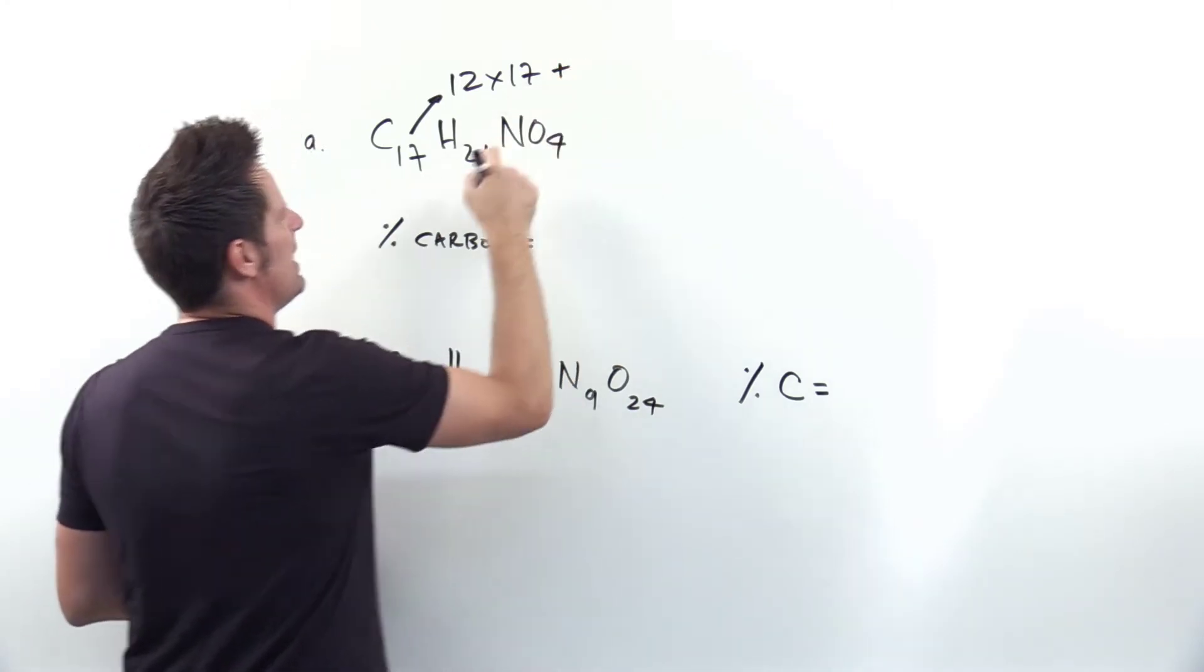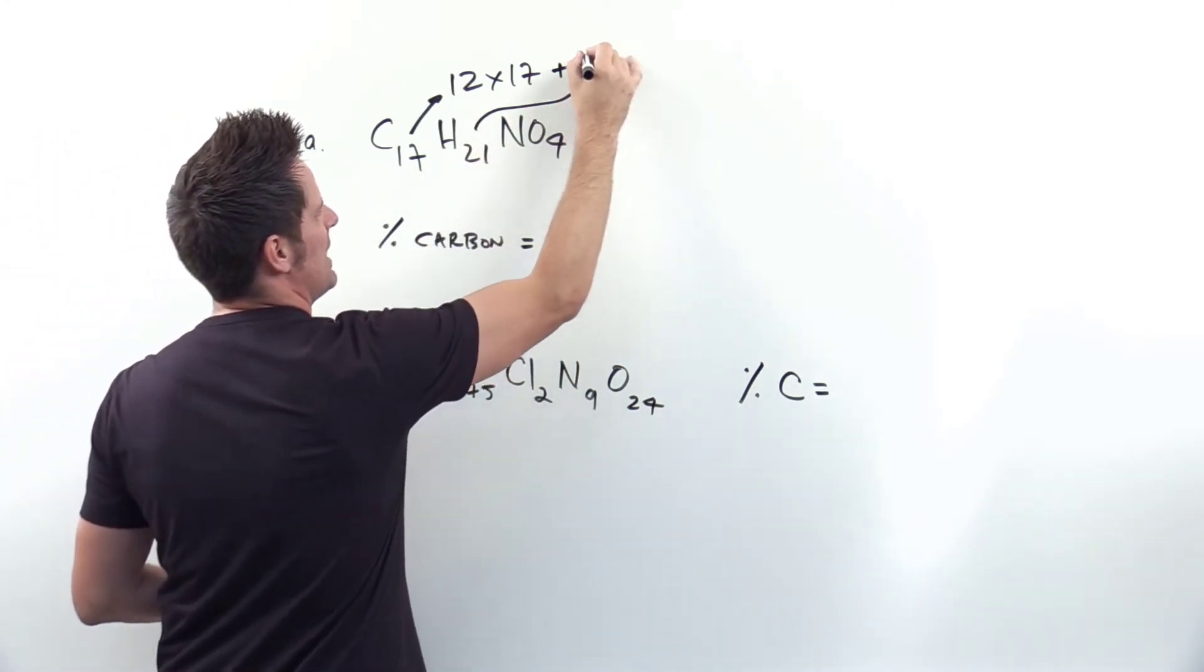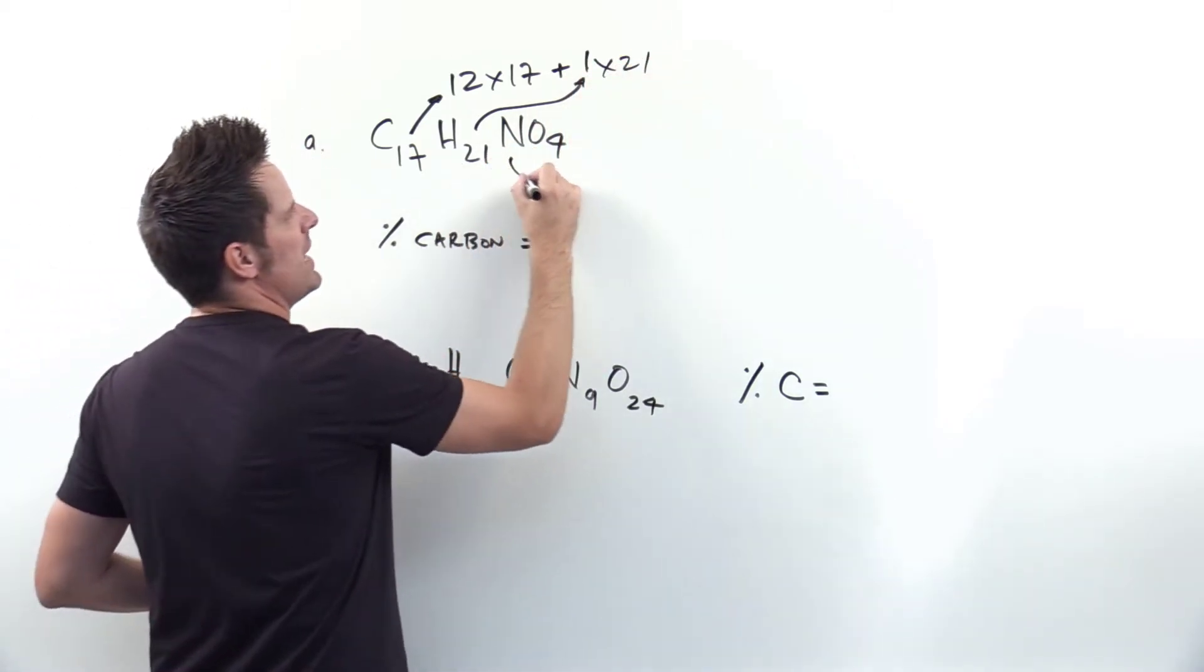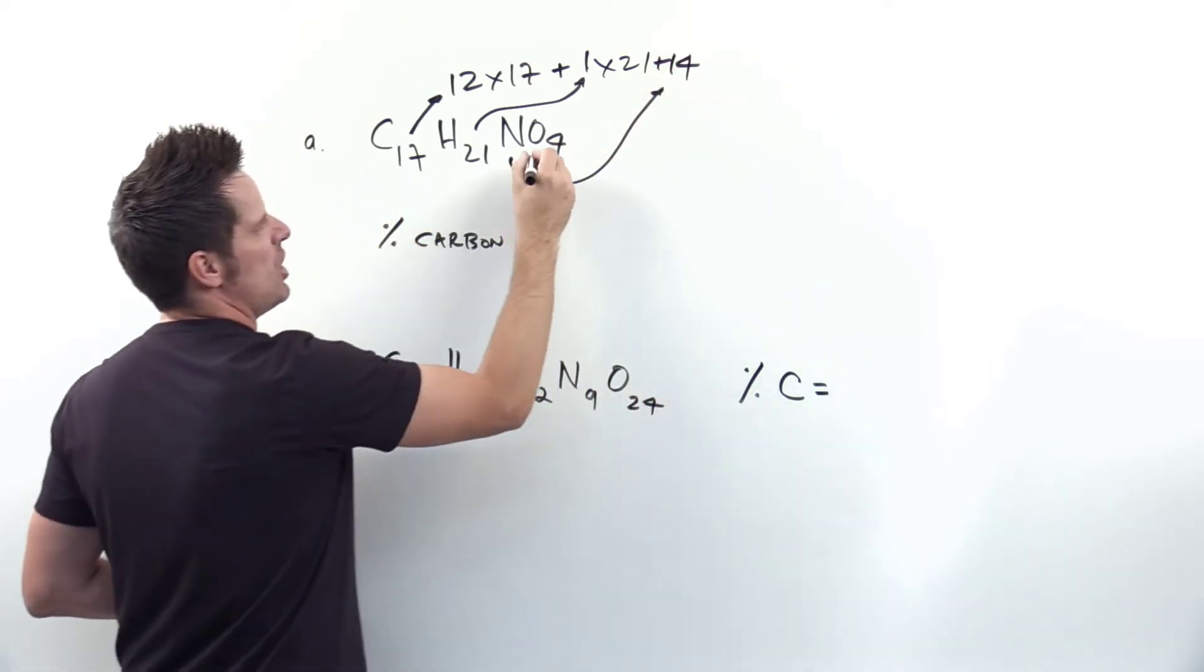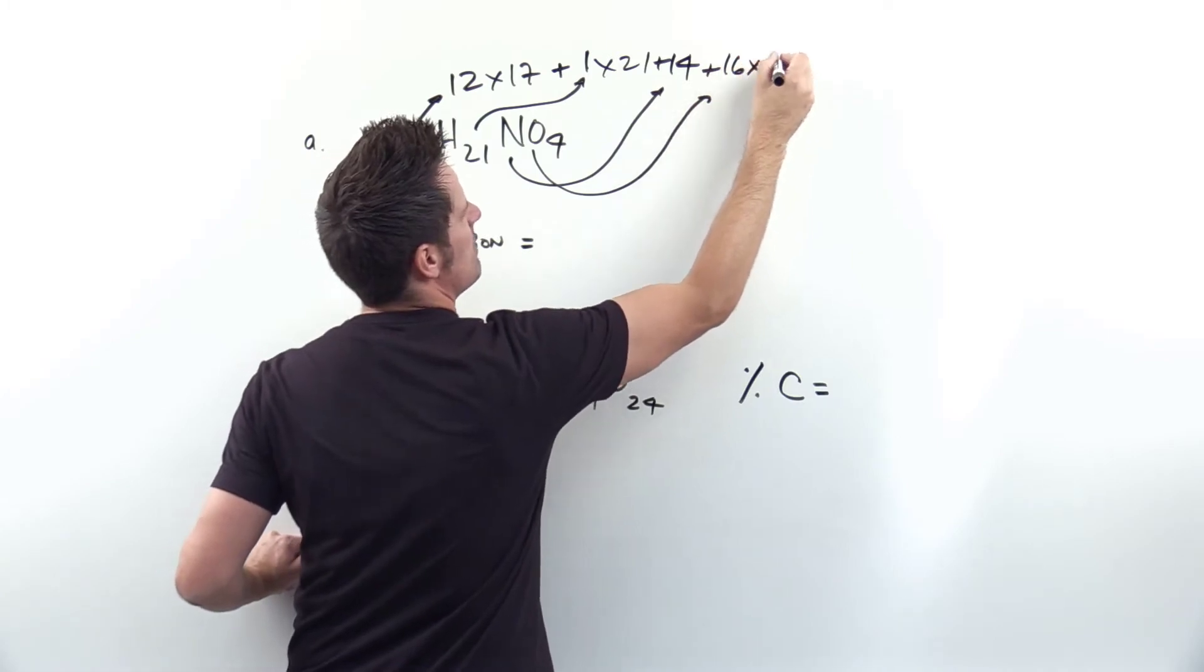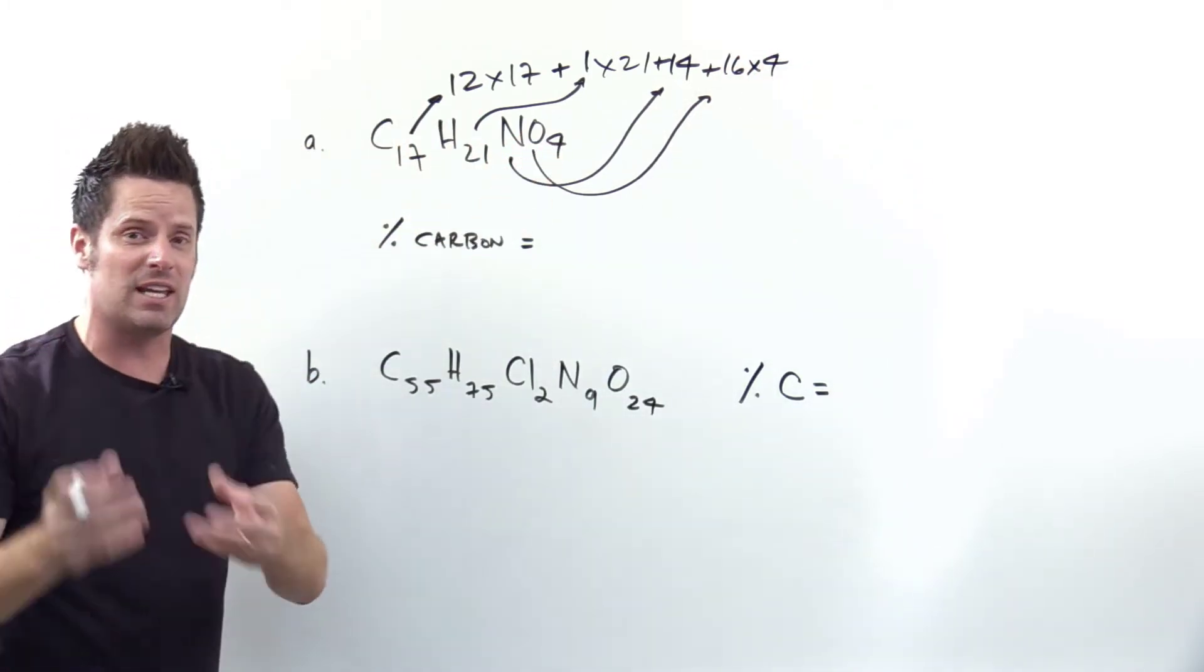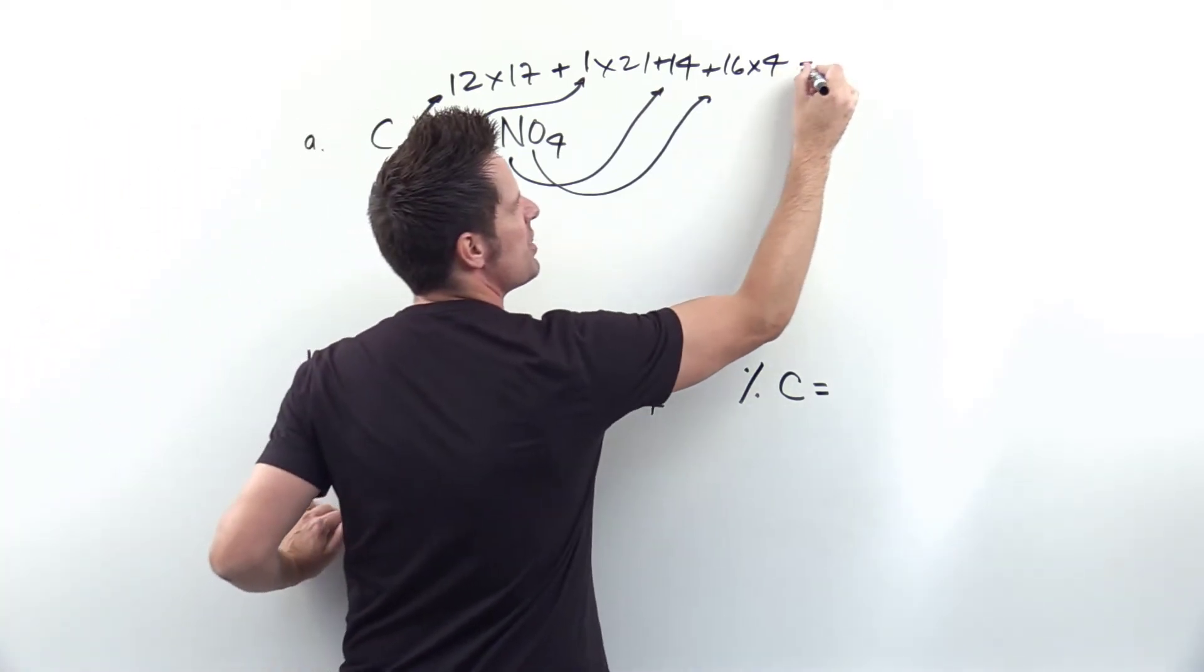And then I'm going to add to that each hydrogen weighs one. That's hydrogen's atomic weight. Again I'm rounding and there are 21 hydrogens here. Each nitrogen weighs 14, and each oxygen weighs 16. So there are 16 oxygens and we times that by four. Okay so you add all of that stuff together, that gives us the total molecular weight of this really exotic formula which comes to 303.